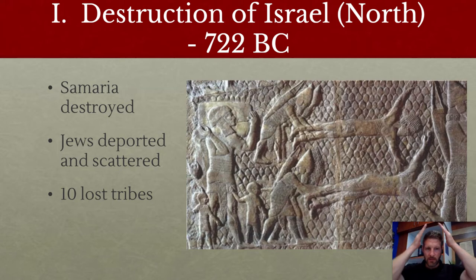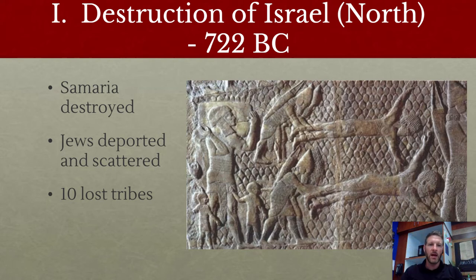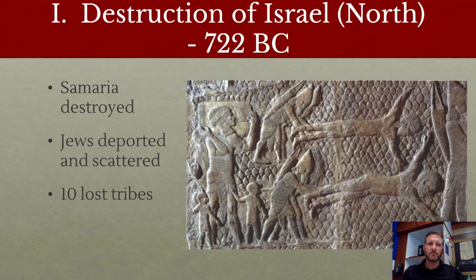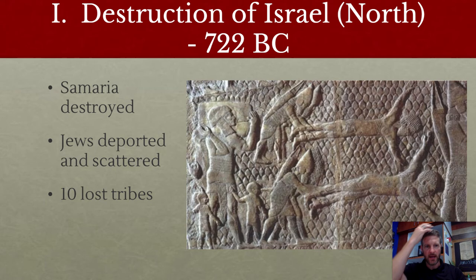This is a relief of an Assyrian palace showing Assyrian troops with their famous coned or pointed helmets. What they're doing is killing Jewish prisoners — slamming them up against a wall until they're dead. The Jews are depicted with a kind of short, curly hair and curly-haired beards as a caricature.